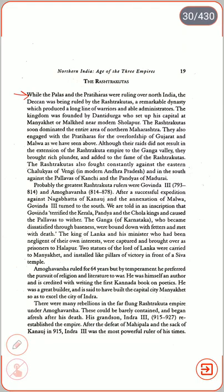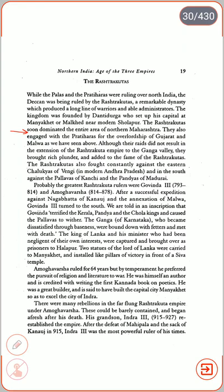While the Palas and the Pratiharas were ruling over North India, the Deccan was being ruled by the Rashtrakutas — a remarkable dynasty that produced a long line of warriors and able administrators. The kingdom was founded by Danti Durga, who set up his capital at Manyakhet (or Malkhed) near modern Sholapur. The Rashtrakutas soon dominated the entire area of Maharashtra and also engaged the Pratiharas for overlordship of Gujarat and Malwa. Although their raids did not result in the extension of the Rashtrakuta empire to the Ganga valley, they brought rich plunder and added to the fame of the Rashtrakutas.